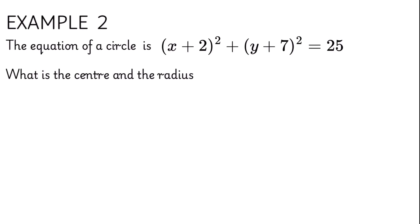For example 2, we are finding the center and radius of the circle x plus 2 squared plus y plus 7 squared is equal to 25.